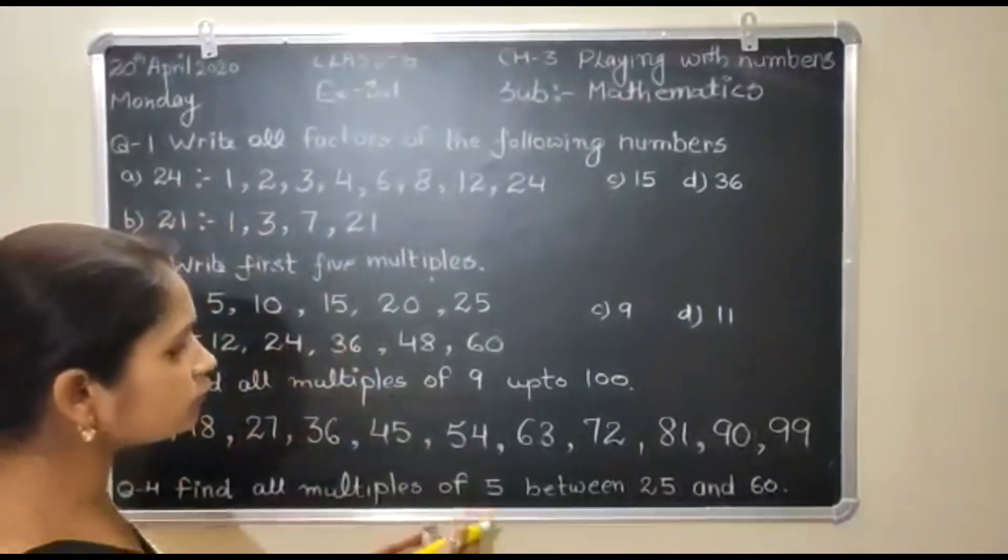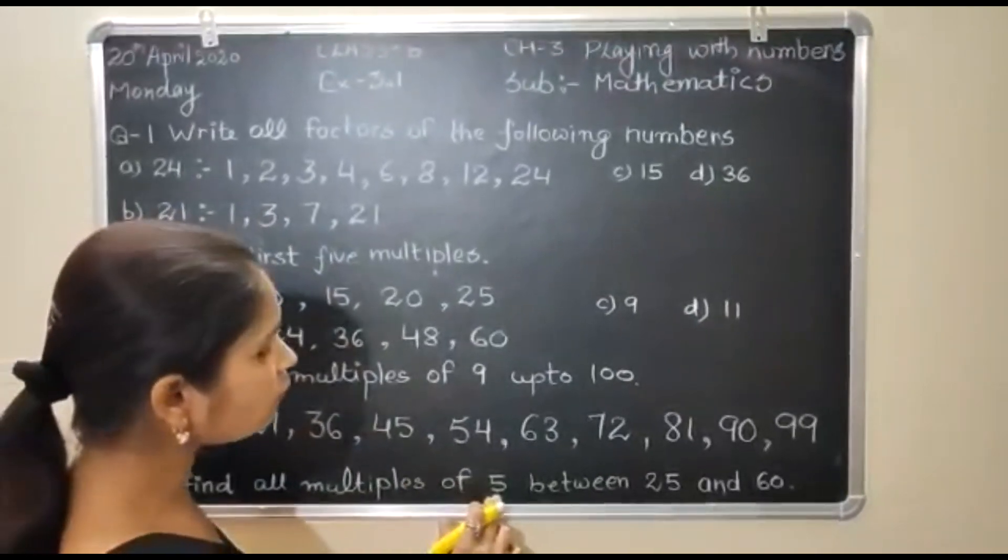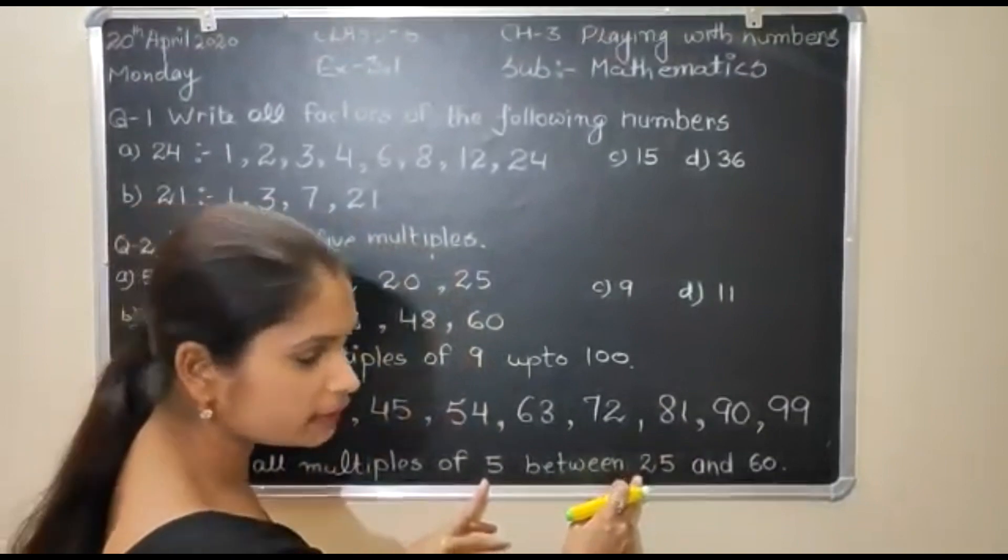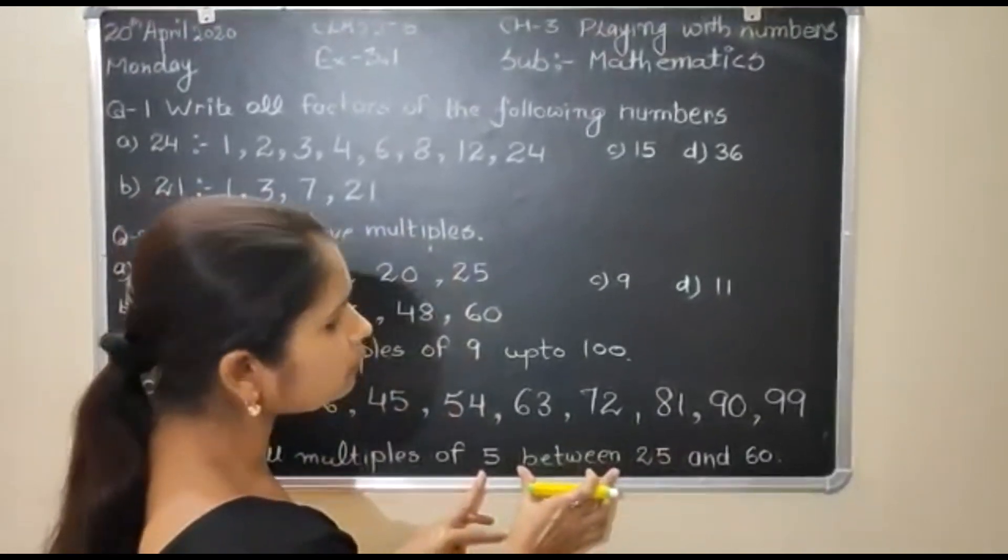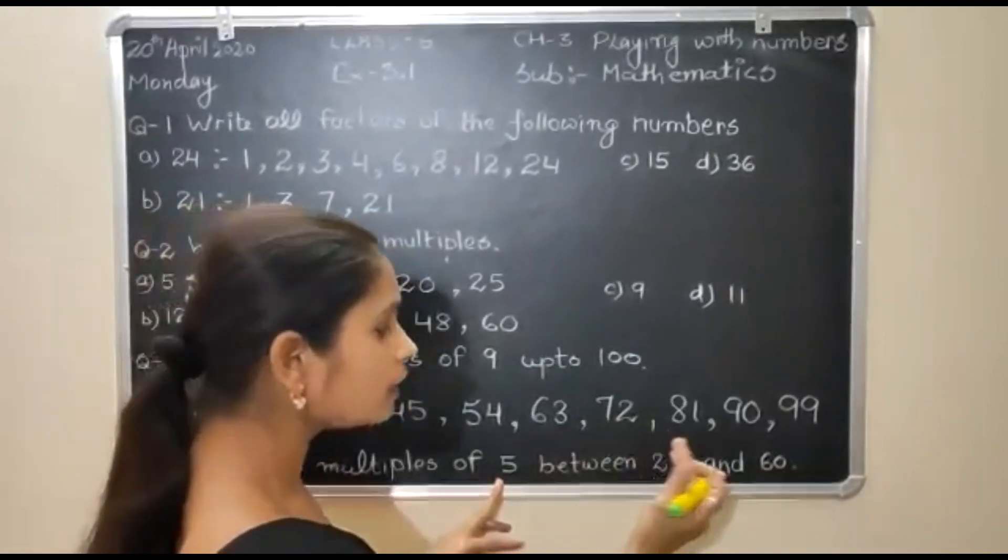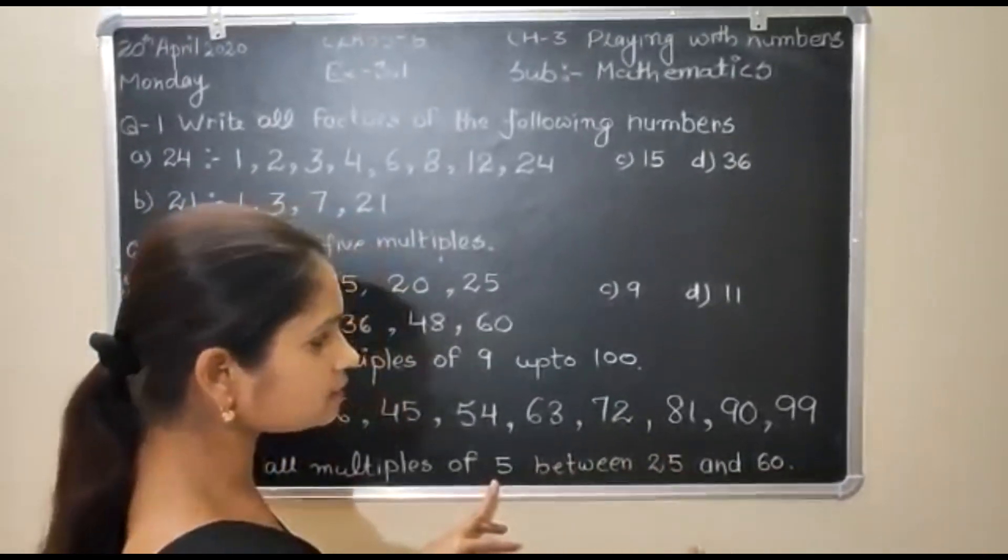In this question, you have to write multiples of 5. You don't have to include 25 because it means between. It means 25, next multiple will be 30. So you have to start from 30.